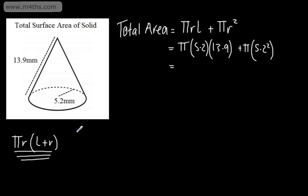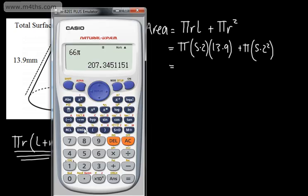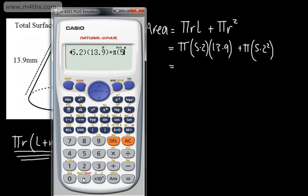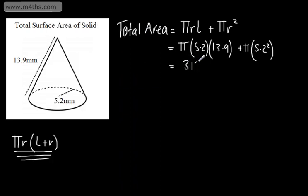We can go ahead and simply type this into the calculator. So we can hit shift pi, and then we've got the 5.2 — you can use brackets or the multiplication sign, it really doesn't matter — then we've got 13.9, and then we will add to that pi multiplied by 5.2 squared. And that is going to give us 2483 over 25 pi. So this is our exact answer, or 312 to the nearest integer, and this will be millimeters squared. Remember, this is an area, so whatever your units are, it will be squared.